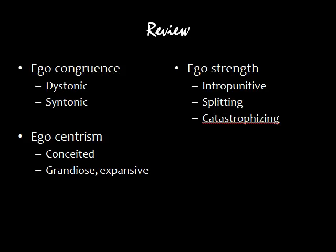Let's review. Today we learned about egocongruence, looking at both ego dystonic and egocentronic behavior. We looked at egocentrism and especially examined conceited and grandiose or expansive concepts. And we also looked at ego strength — including intropunitive, splitting, and catastrophizing forms of low or problematic ego strength. This concludes Section 7 of the Mental Status Examination Training.